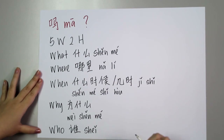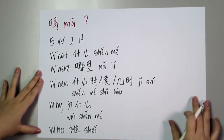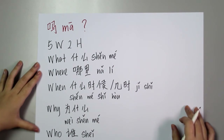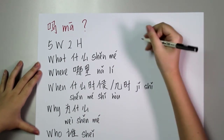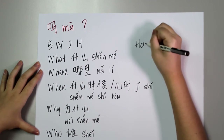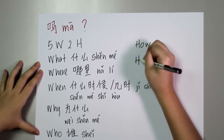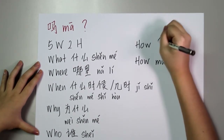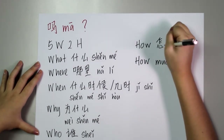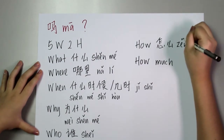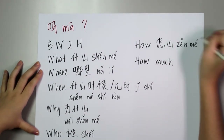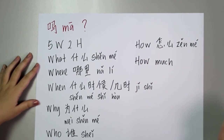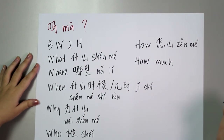After learning the five W's, we have two H's. The first H is 'how' — how means 怎么. If you want to ask 'How are you?' you will say 你怎么了 or 你最近怎么了, which means 'How are you?' or 'How are you recently?'